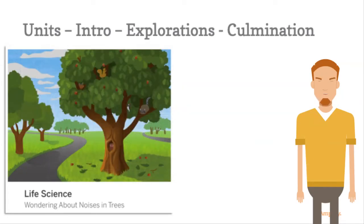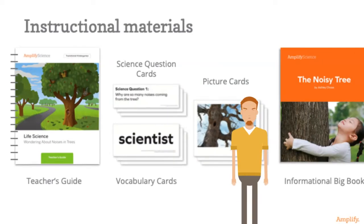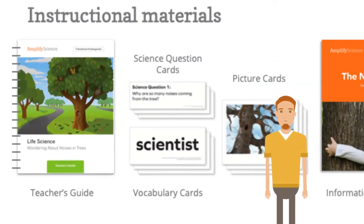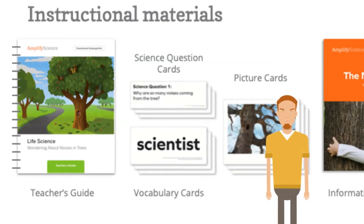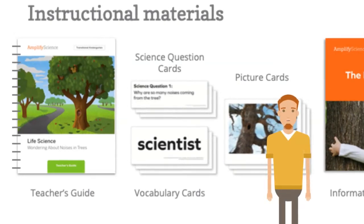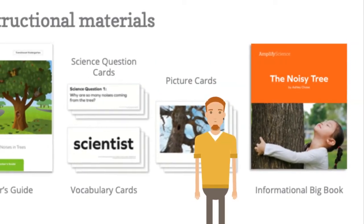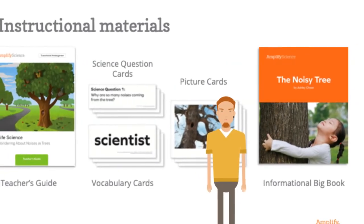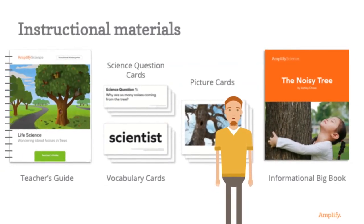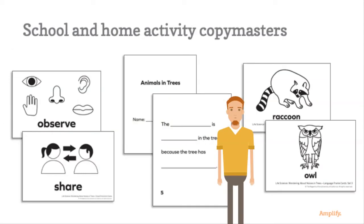Now let's take a look at the instructional materials that bring science to life for these littlest learners. Teaching is easy with these resources that come with each unit, starting with a well-designed teacher guide that is easy to follow and includes all the supports needed when teaching TK students. Students will get to follow along as their teacher reads from colorful and fun informational big books. A print-rich environment is achieved with the engaging science question cards, vocabulary cards, and picture cards. Teachers can also use school and home activity copy masters for students to collect evidence, demonstrate their understanding, and extend their learning beyond the classroom.